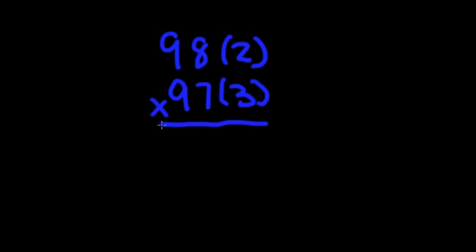Remember you take the top number, 98, and you subtract the second number in parentheses. 98 minus 3 is 95.